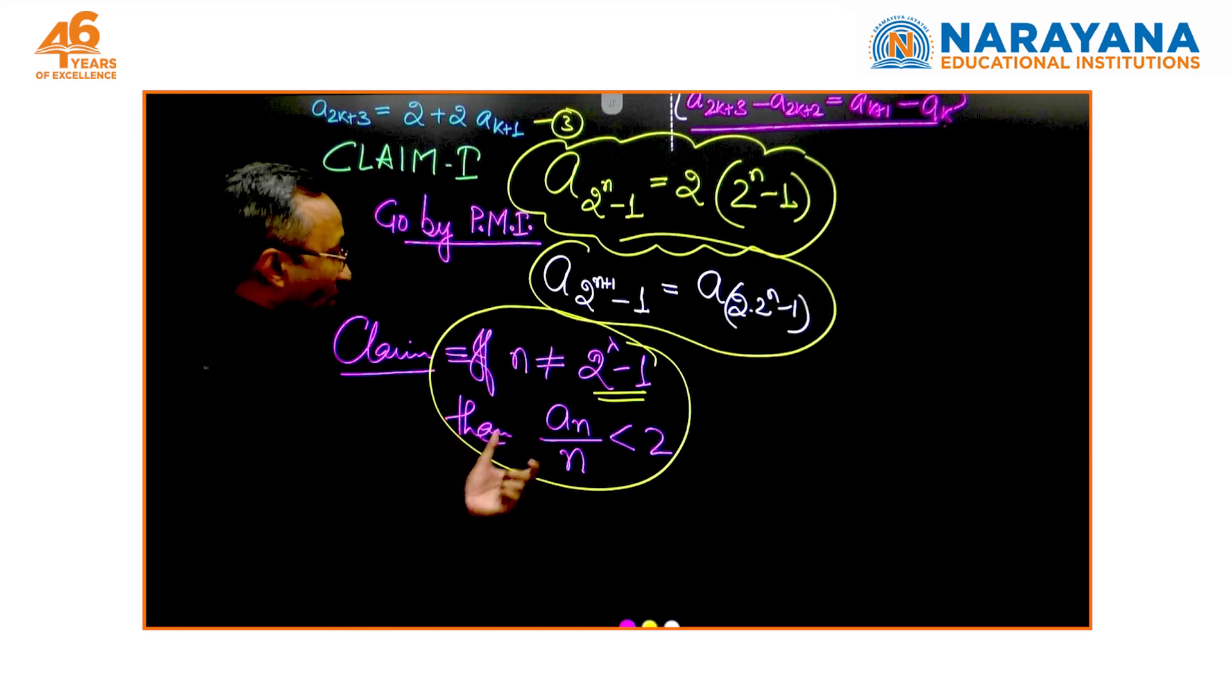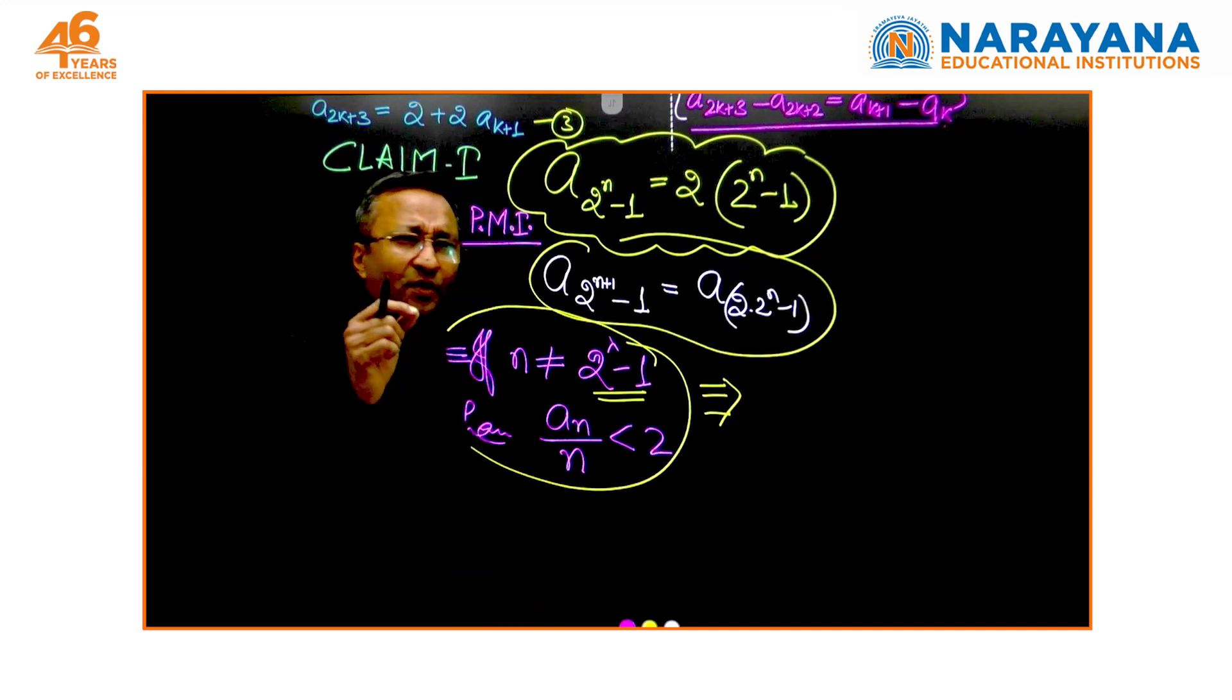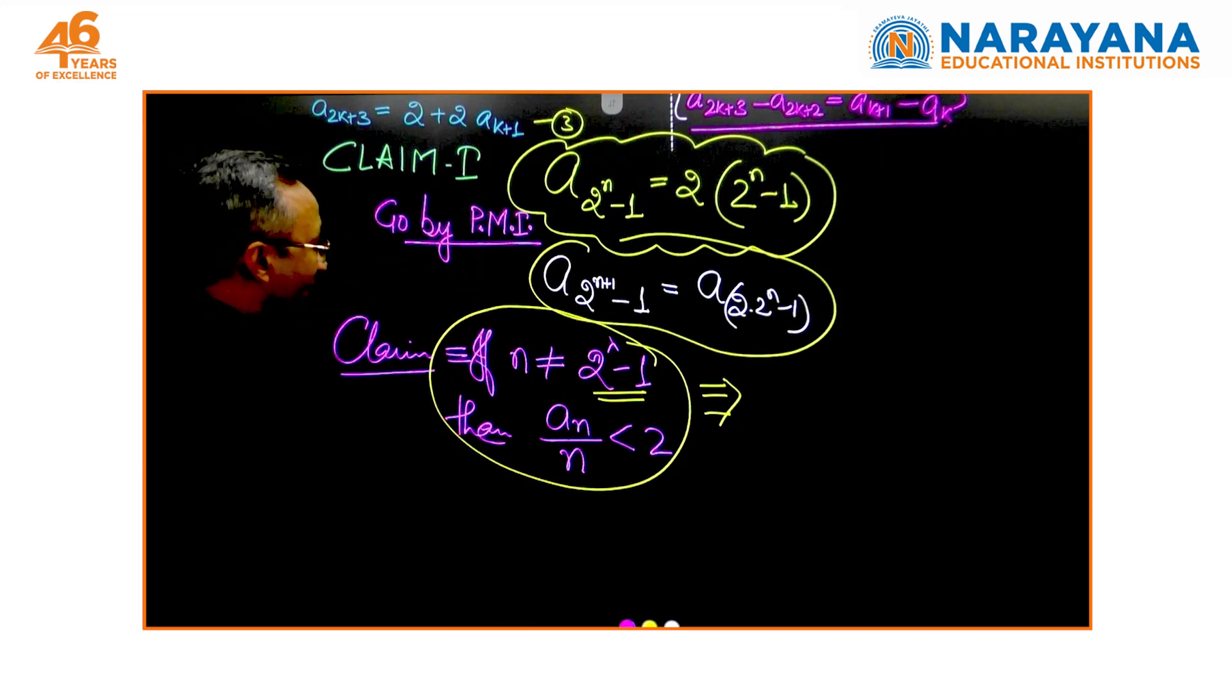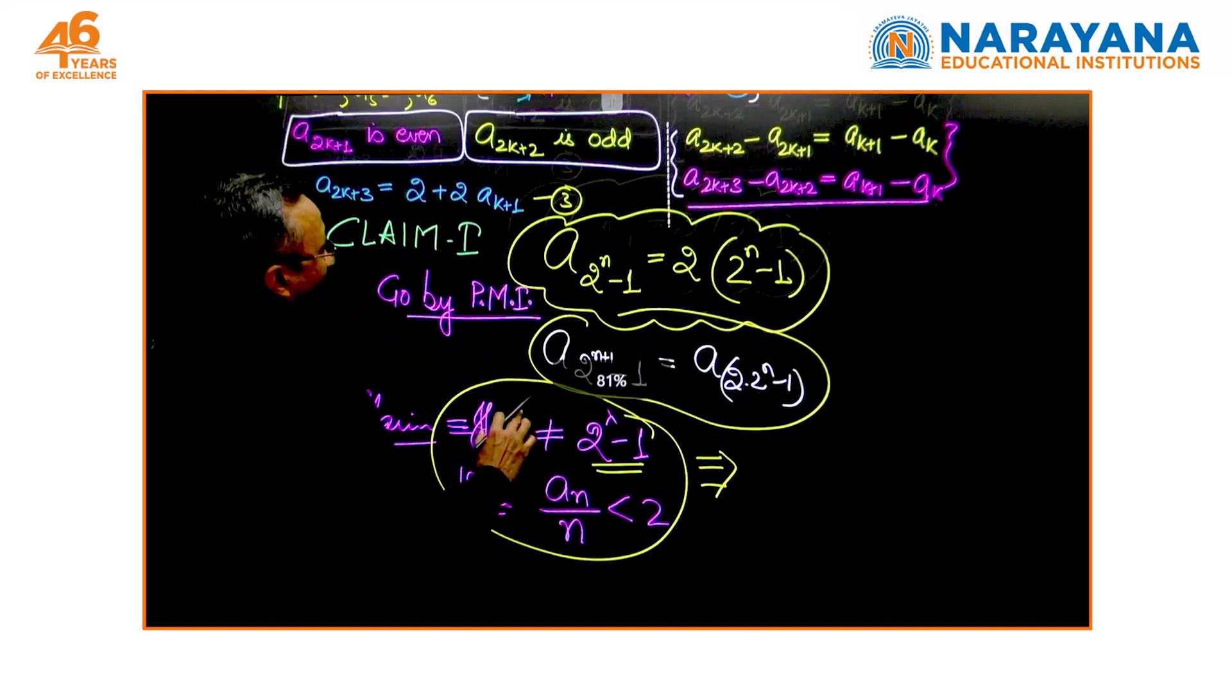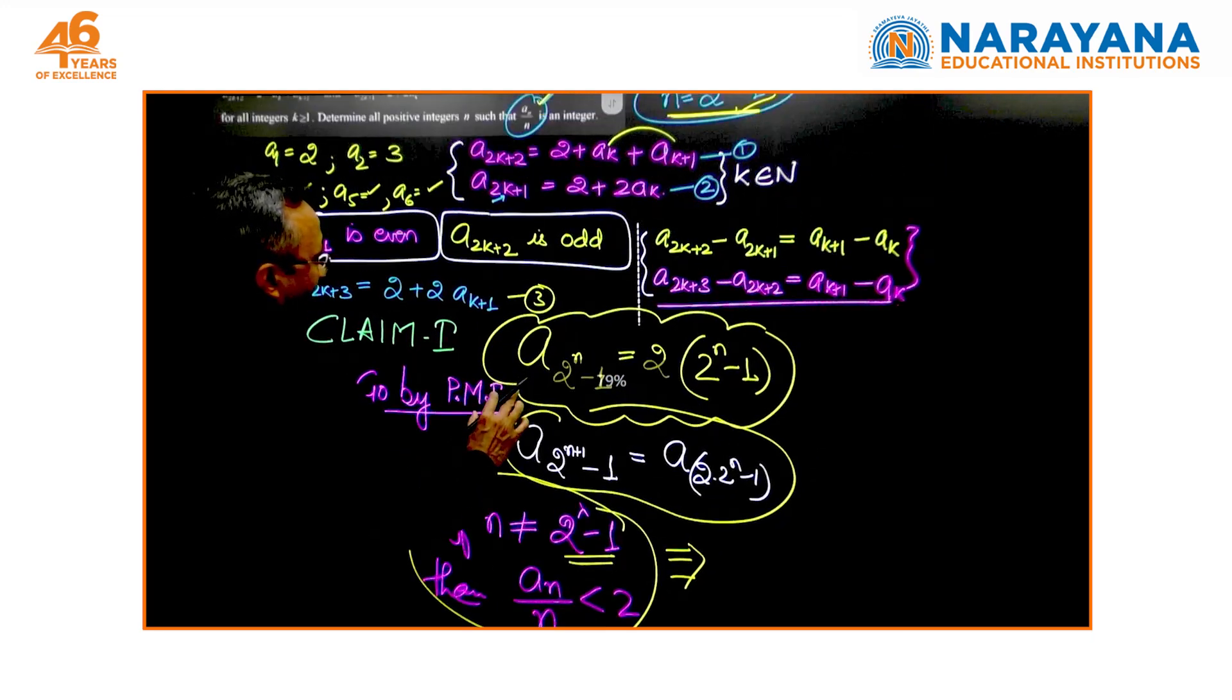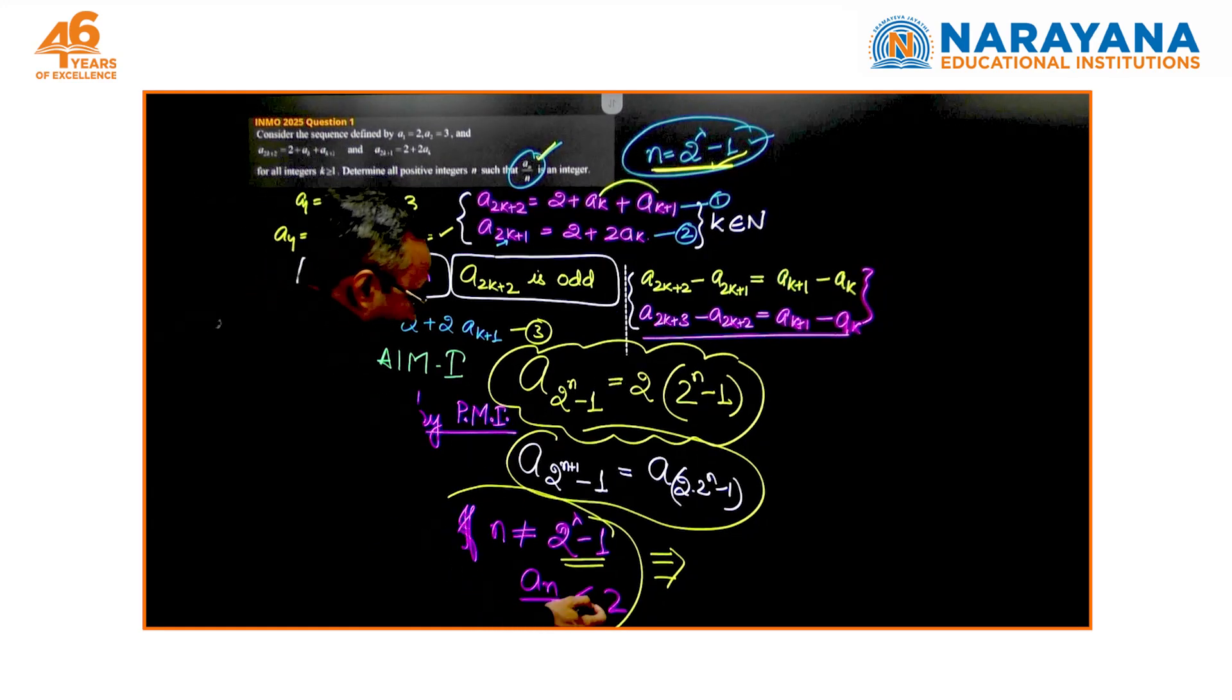If we go ahead by this, which I am sure you would be able to do because it is pure principle of mathematical induction, we are done because then we establish that an/n is an integer for any n which is of the form 2^λ - 1.